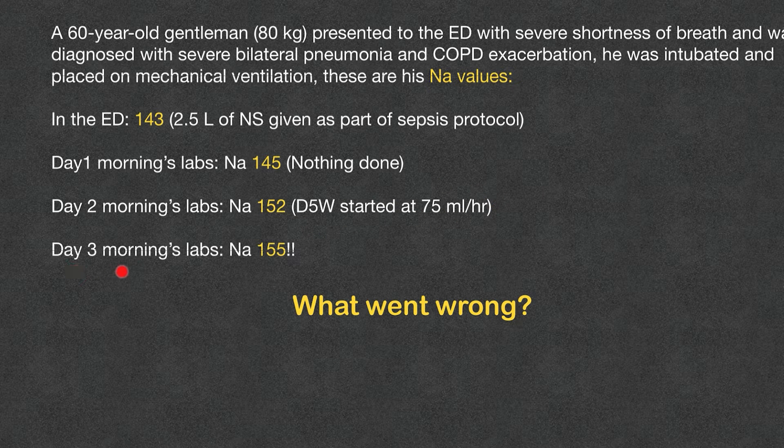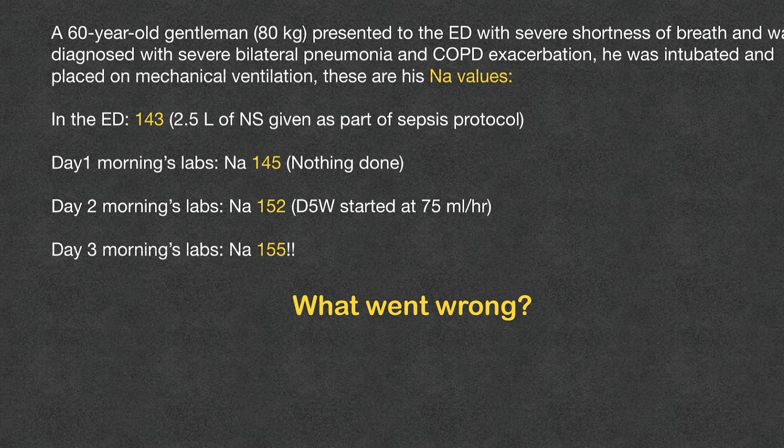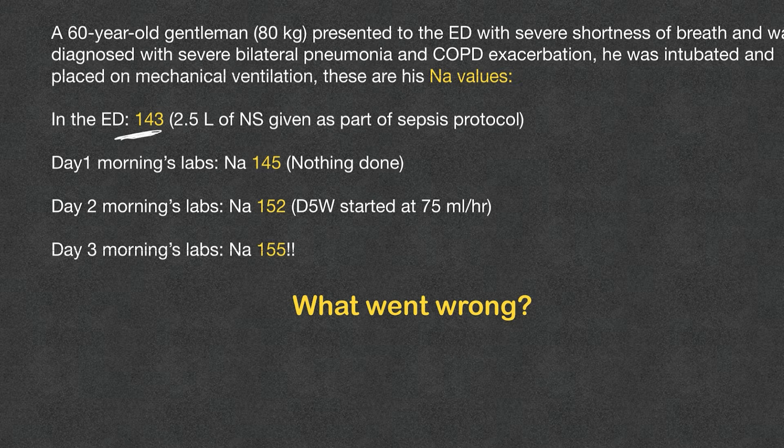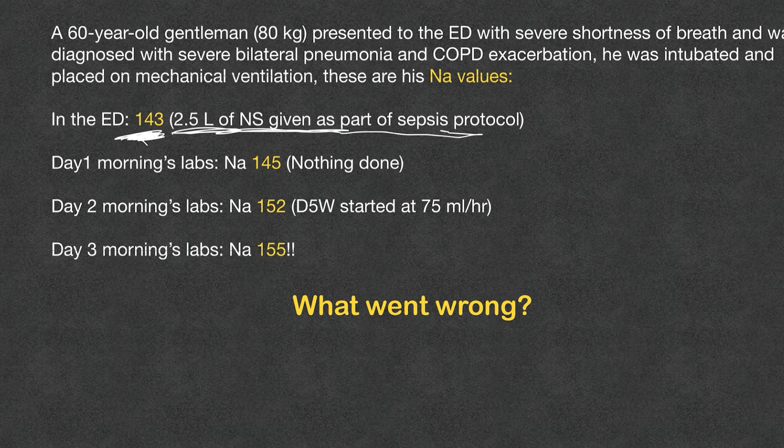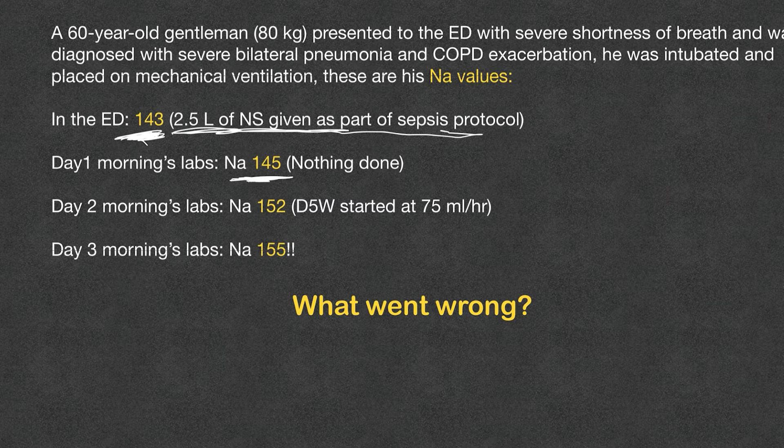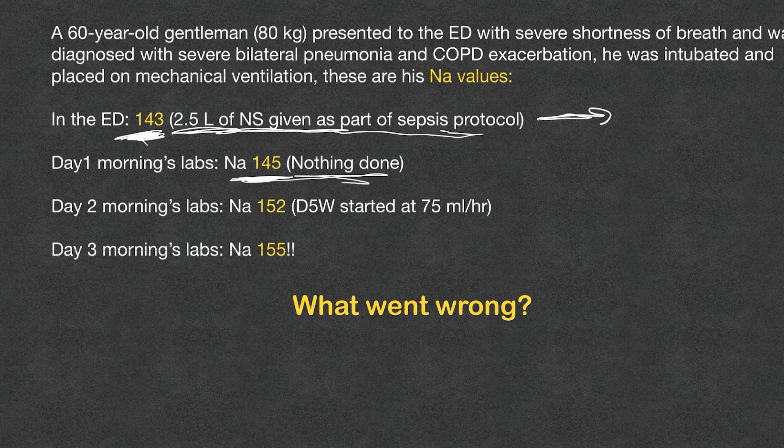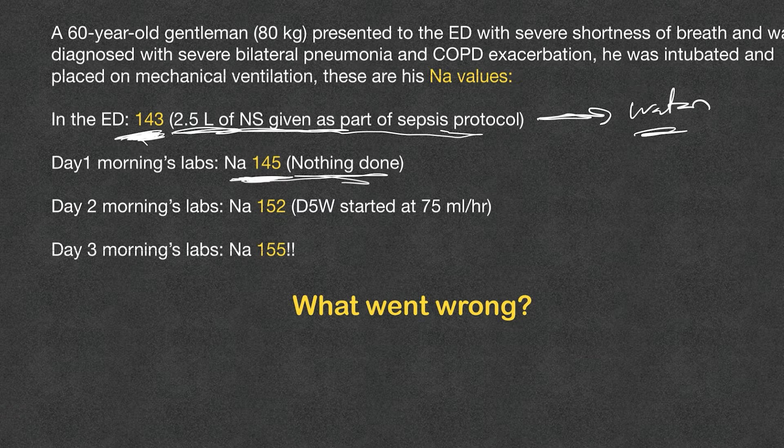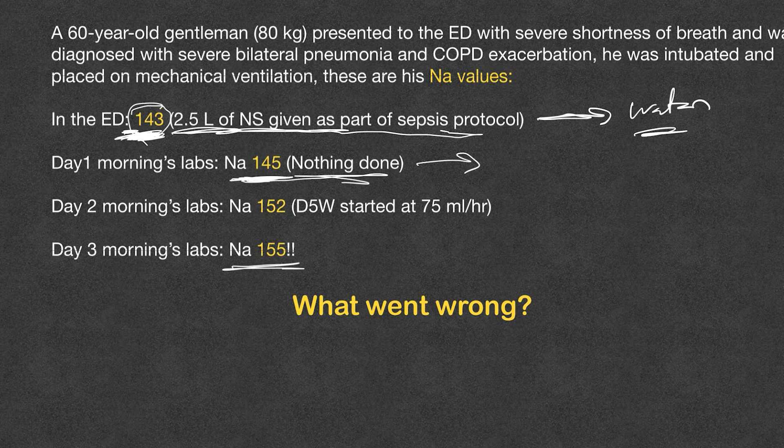On day one of admission, morning lab sodium was 145, nothing was done. Day two, morning lab sodium was 152, D5W started at 75 ml per hour. And day three, morning lab sodium was 155. What went wrong with this patient? The patient clearly had some water deficits even from the time the lab was showing sodium 143, plus we gave some isotonic solution. Even the next day, the patient was having more water deficit as expected and nothing was done. Treatment should have been started right here to give some water in any form, whether in the form of half NS, D5W, or free water through NG tube.